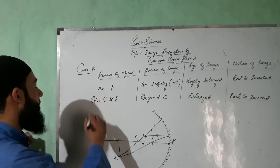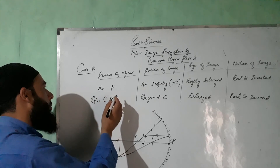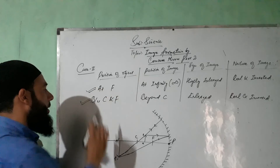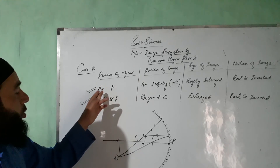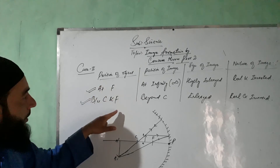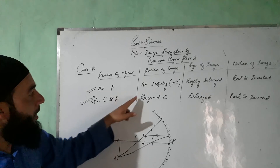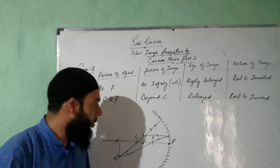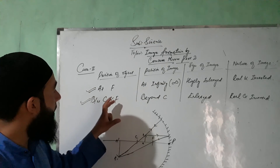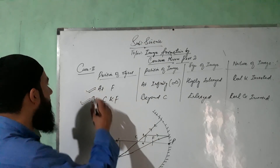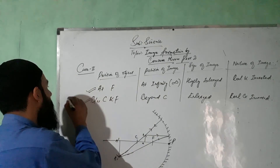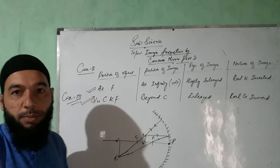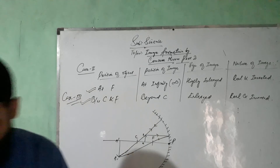Position of object between C and F: image is beyond C. Summary — object at F: image at infinity. Object between C and F: image beyond C. This is the ray diagram for case 2 and case 3. That was all about today's topic, thanks for watching.